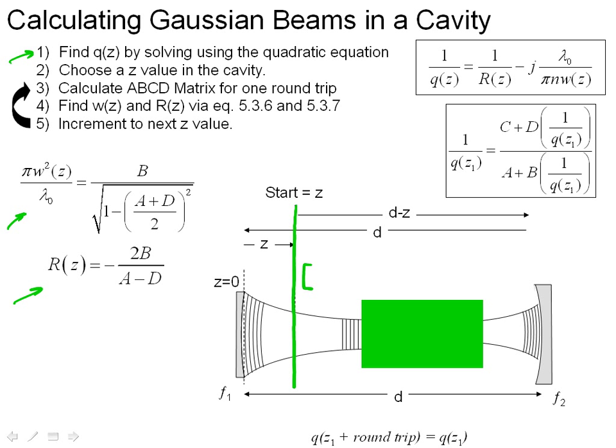Well, we'd have a matrix that looked like 1D01. We'd have the matrix, which I don't remember off the top of my head, for a beam entering a flat surface. We'd have another matrix here, and so on. And you'd write the ABCD matrix for the cavity starting at this particular point.